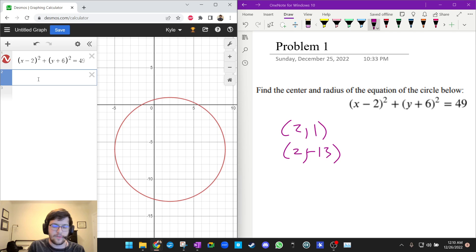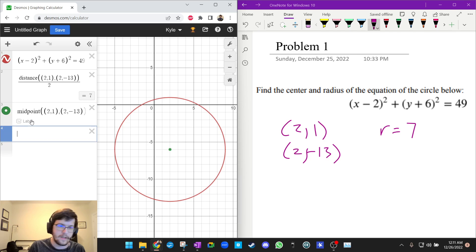So I'm going to press the division sign to start a fraction. Now I'm going to type in distance and then 2 comma 1 comma 2 comma negative 13, and then I'm going to divide by 2 and it tells me 7. So that means my radius is 7, so the diameter is the distance and then we divide that by 2 to get the radius. And now if I wanted to find the center I could do 2 comma 1 comma 2 comma negative 13 using the midpoint function and it tells me the center is 2 comma negative 6. So that would be the answer to this one.